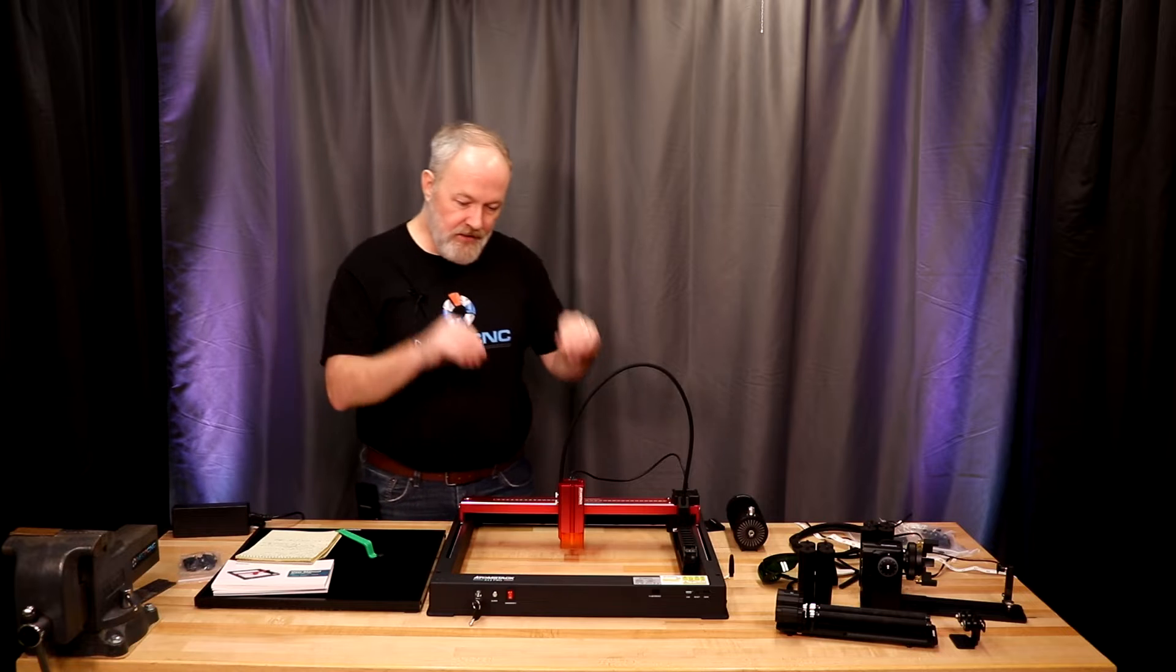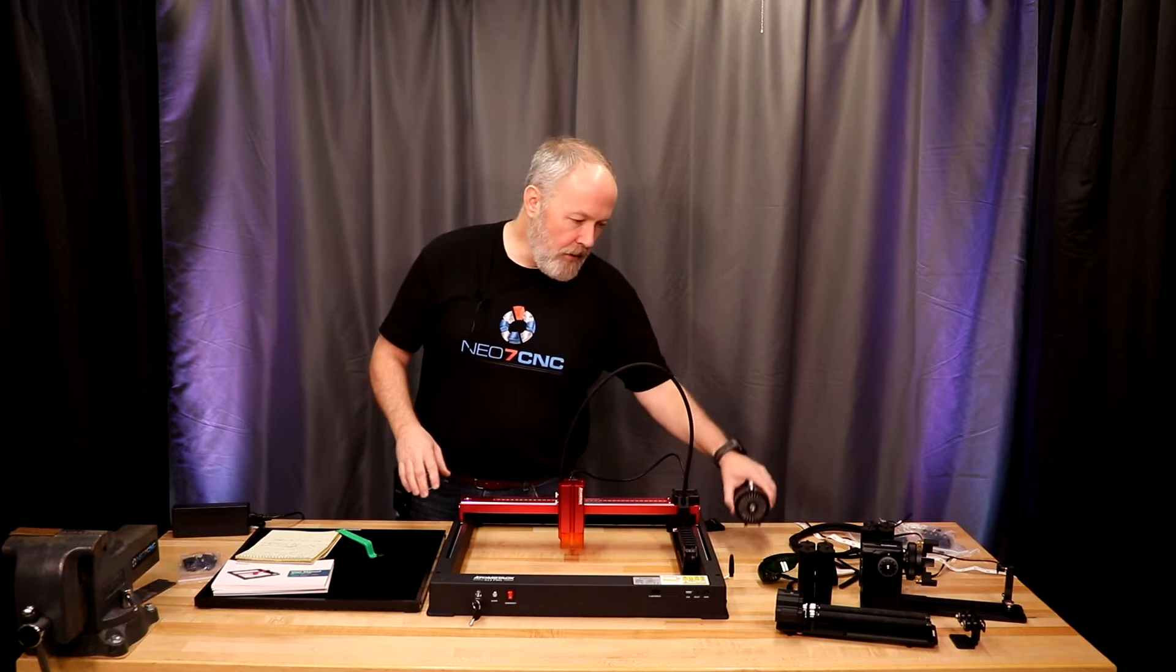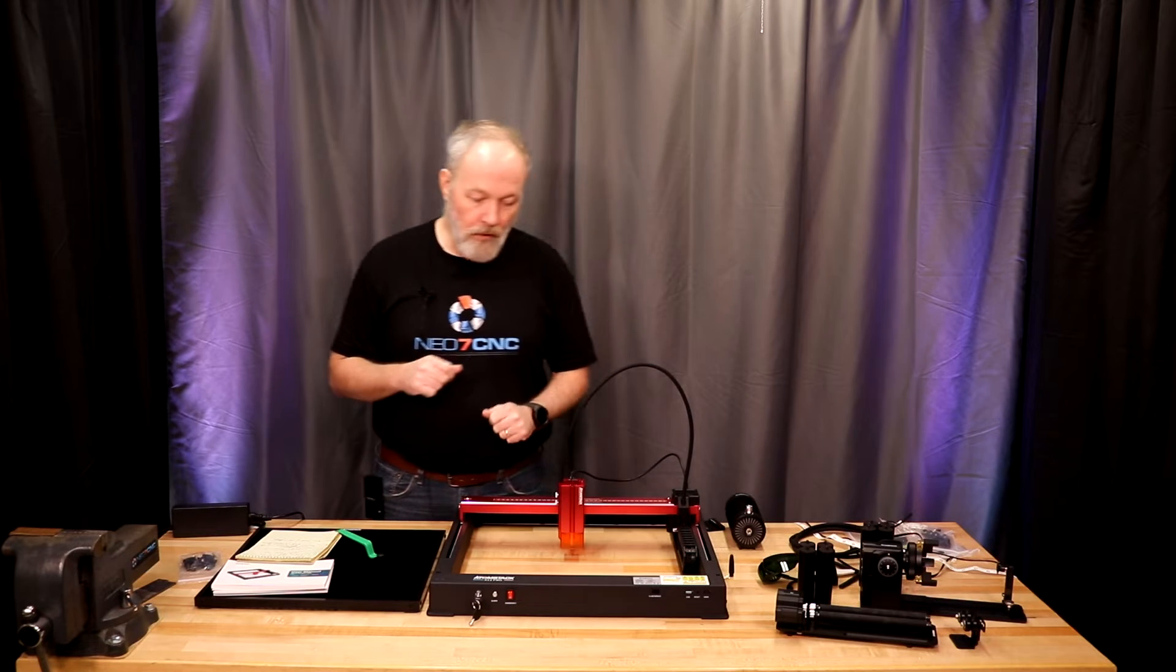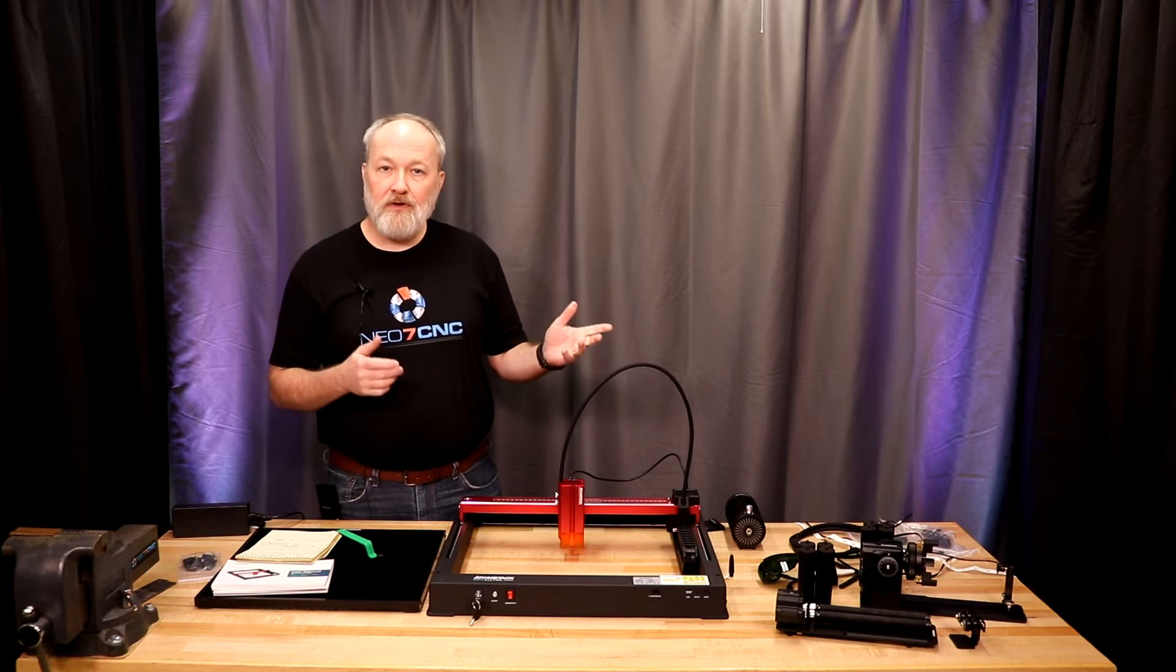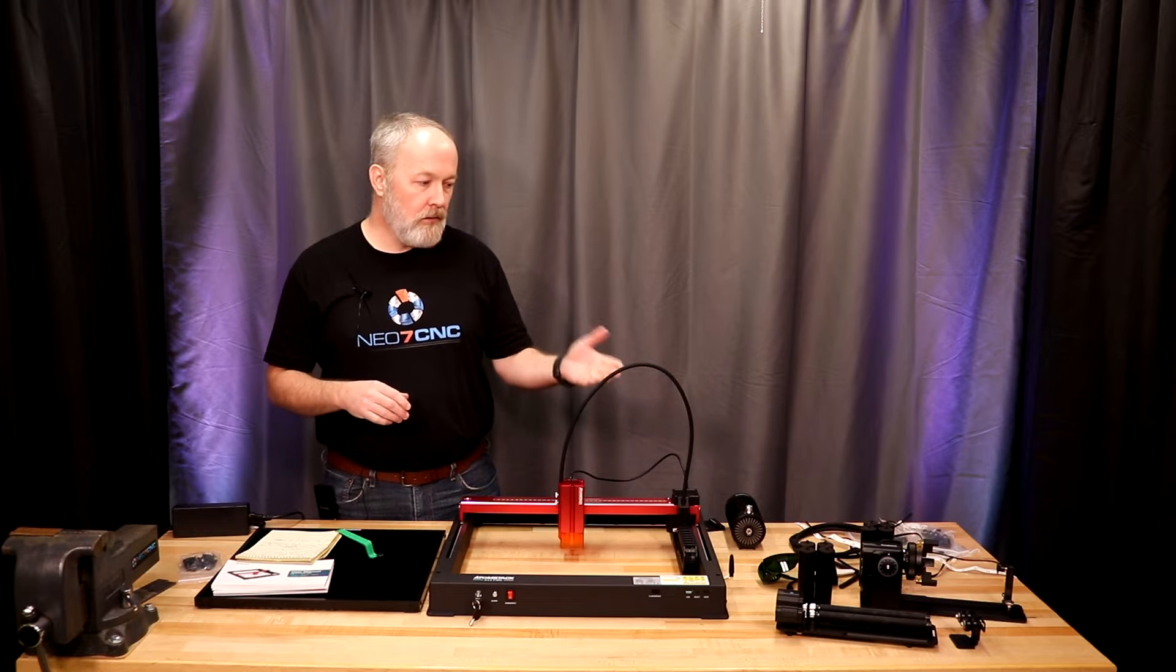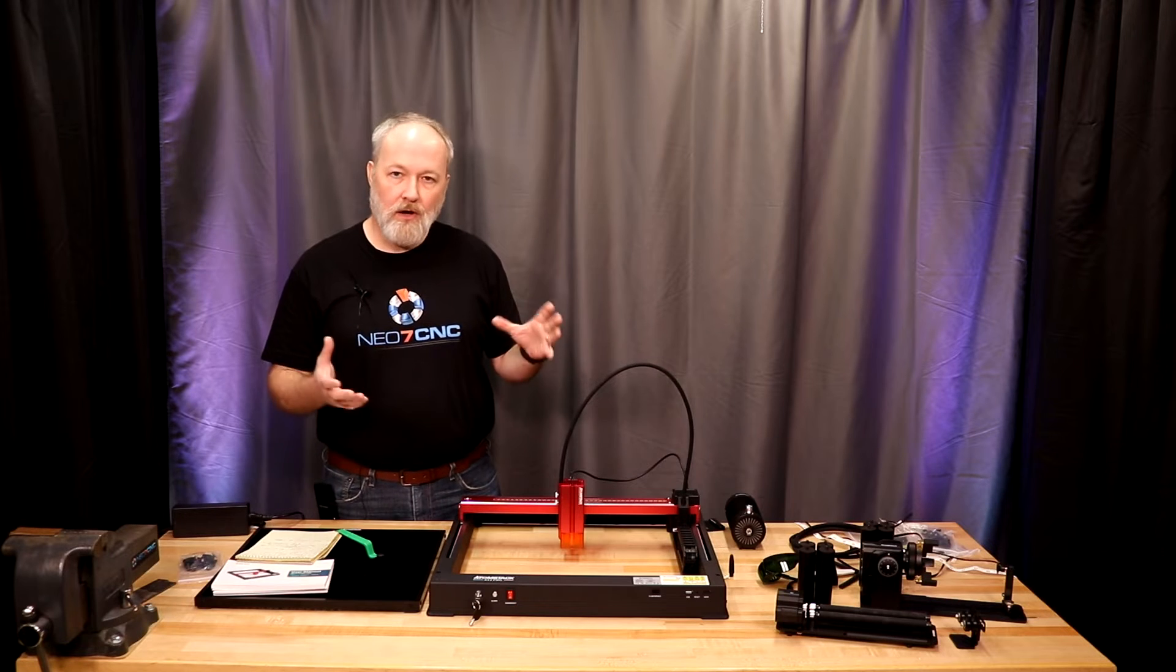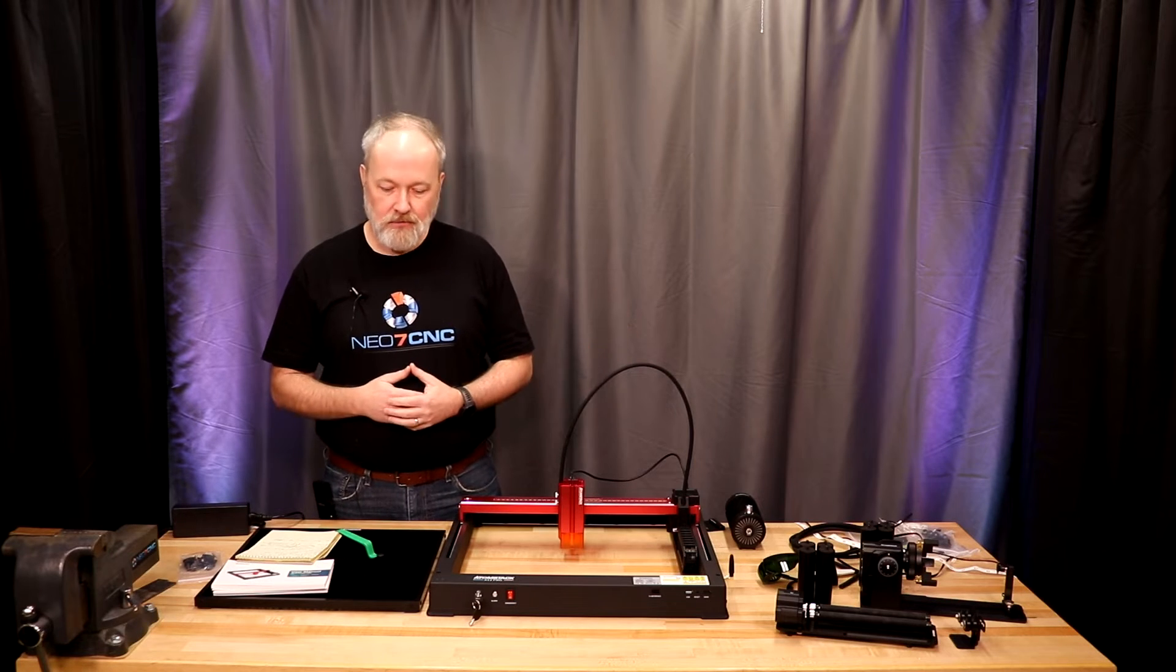If you wanted to get this machine, the A12 Pro with the bed, with the air pump, and with the two different rotaries, you're looking at $778 for all of that. Not everybody's going to need a rotary, not everybody's going to need two rotaries, so the price will come down because of not needing all the accessories.